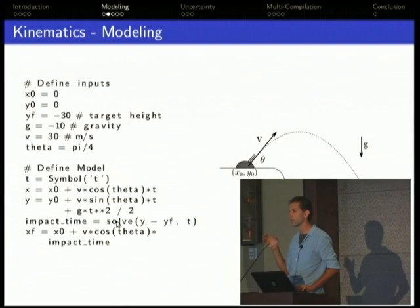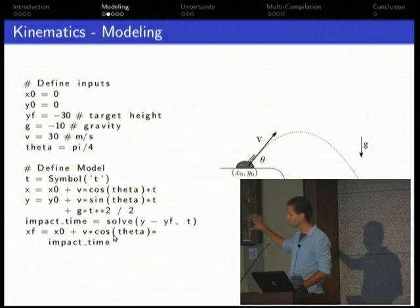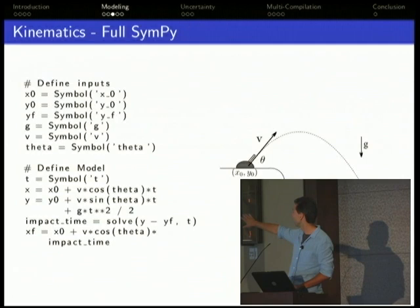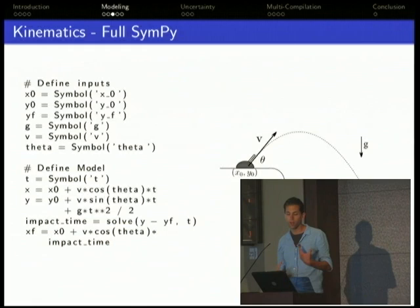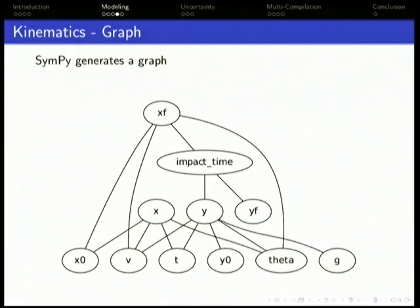The actual way you'd often solve this in SymPy is that the inputs, you wouldn't give numbers. You would change the inputs just to symbols up there. Then SymPy, rather than computing numbers for you, computes a graph. A lot of talks in SciPy the last couple of years have had graphs like this. These are all the variables in that expression. Rather than computing numbers, it builds up this graph for you. The things on the top depend on the things on the bottom. The ones on the bottom are pure inputs. The impact time depends on y, which depends on the velocity, and a lot of other things too.